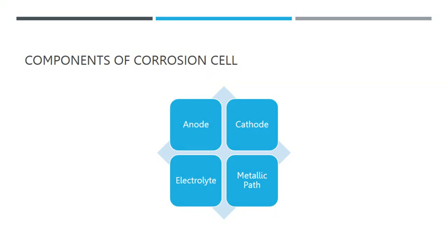A material deteriorates through reaction with its environment, and this is what we call corrosion. This degradation primarily happens electrochemically when it comes to metals. The anode, cathode, electrolyte, and the metallic path are the four separate components of the electrochemical reaction, making up the corrosion cell. Only when all four components are present does electrochemical corrosion take place.